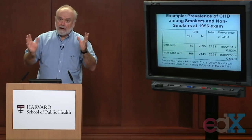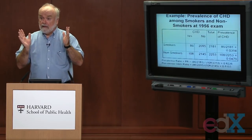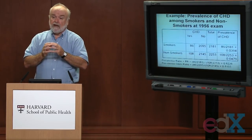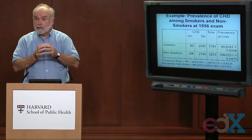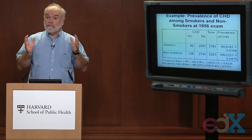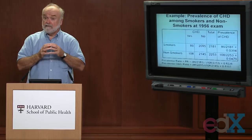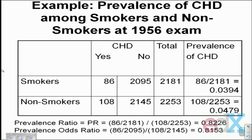I believe this is perhaps a table we've seen already, describing the cross-sectional relationship between the prevalence of two characteristics in the Framingham Heart Study dataset. Using data at the 1956 exam, what we're comparing is the prevalence of smoking — each person was classified either a smoker or a non-smoker — and the prevalence of existing coronary heart disease. Let's look at this data again.